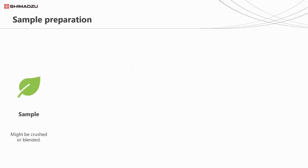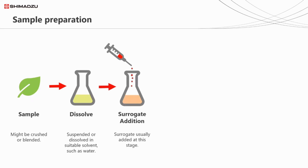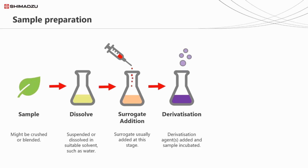Let's take a look at when we add our internal standard and surrogate in the sample preparation process. The first thing we need to do is homogenise our sample if it's something like plant material — this might be using a bead mill, blender, or pestle and mortar. We then need to dissolve the pulp in a suitable solvent, and at this point, or possibly before, we add a known amount of surrogate to a known amount of sample. We then perform derivatisation via an esterification reaction to create a methyl ester of our fatty acid, or FAMES.